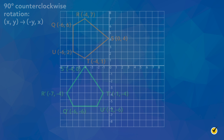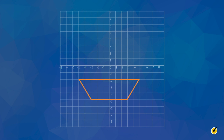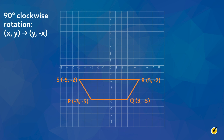One last practice problem. Trapezoid PQRS, where P is (-3, -5), Q is (3, -5), R is (5, -2), and S is (-5, -2), is rotated 90 degrees clockwise about the origin to create trapezoid P', Q', R', S'. We will start by deciding which rule to use for the 90 degrees clockwise rotation about the origin. We're going to use (x, y) becomes (y, -x). Now let's apply this rule to the coordinates of the vertices of PQRS.